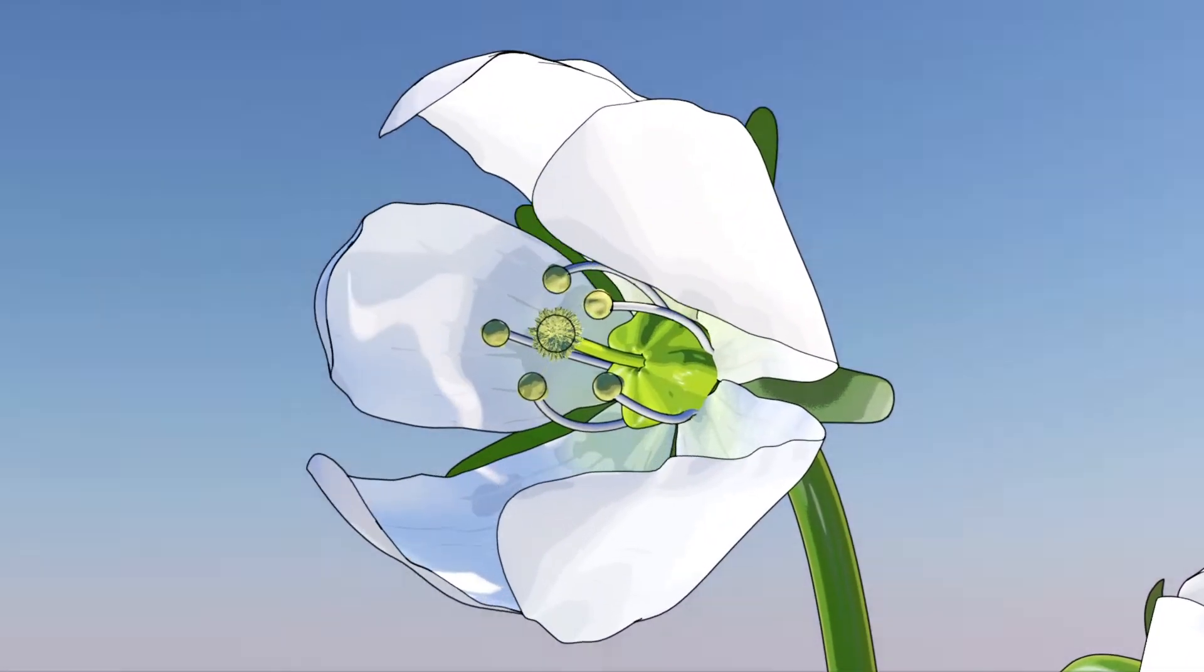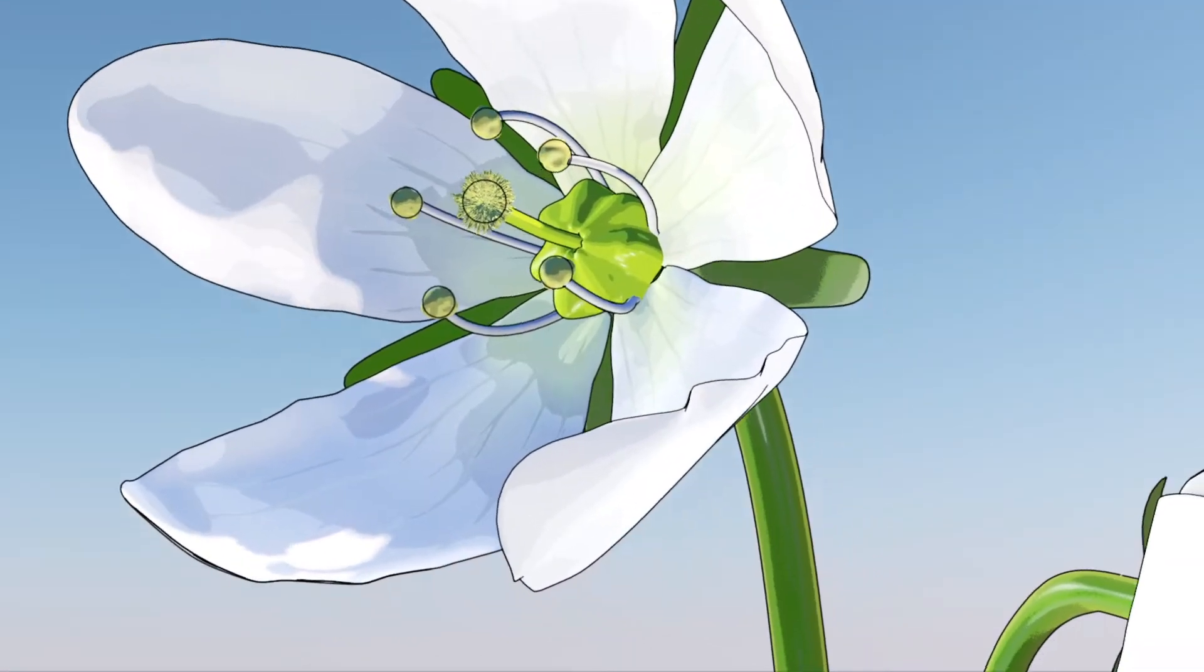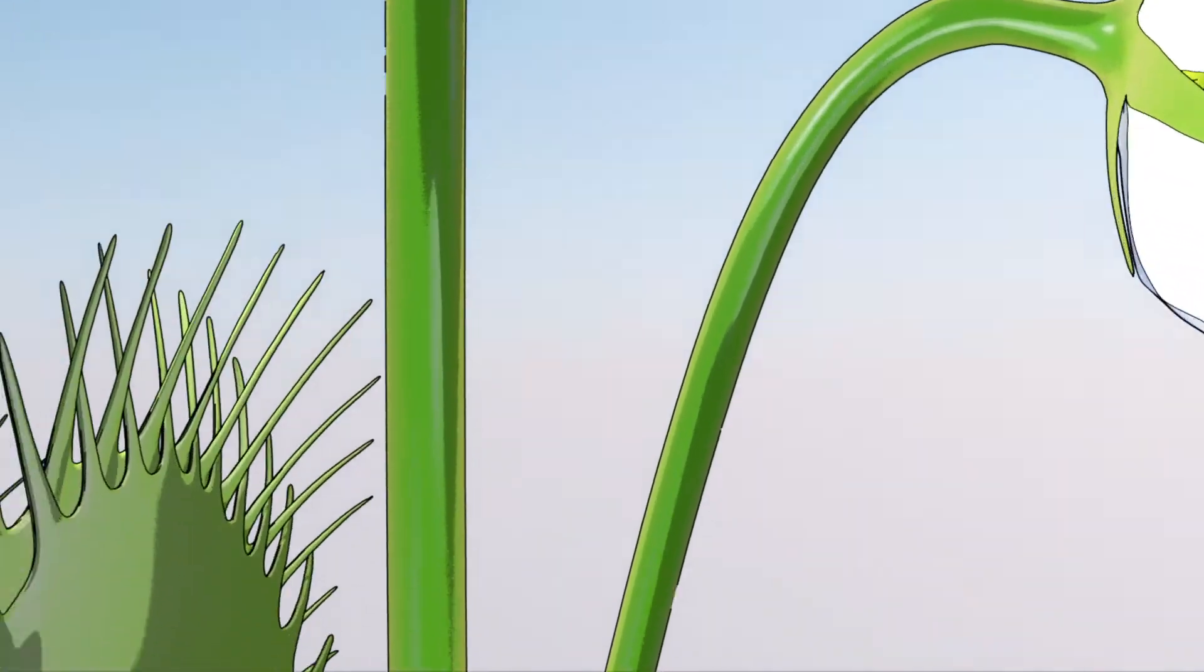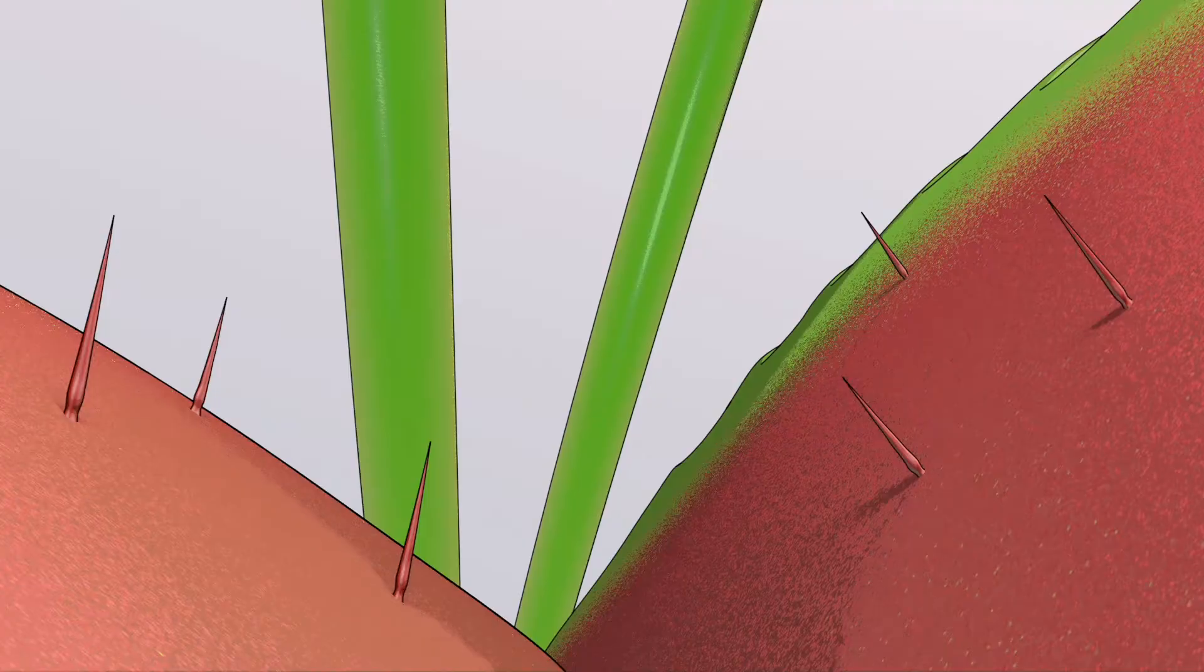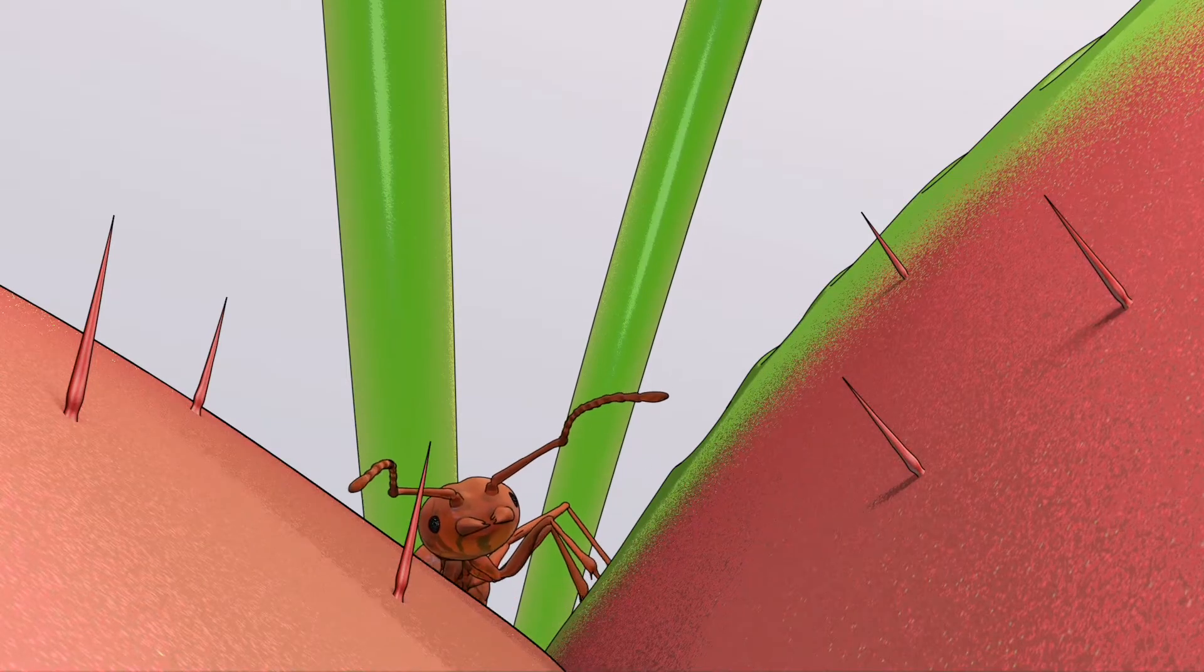Venus flytraps are carnivorous plants found in the Carolina wetlands of the eastern United States. They use their leaves as traps to catch prey, usually small insects or spiders.